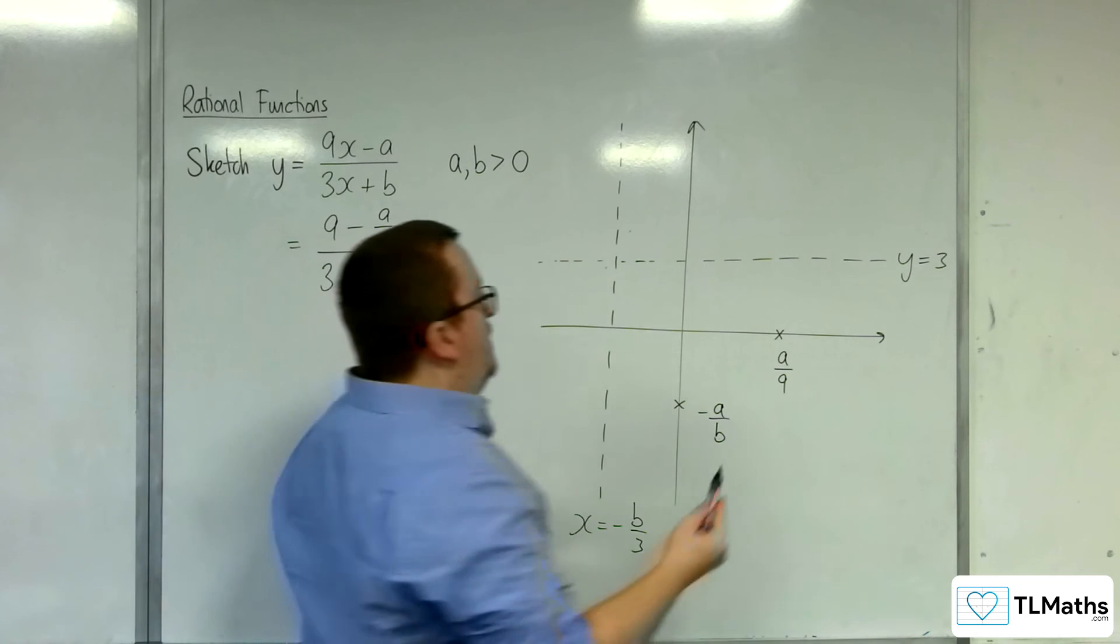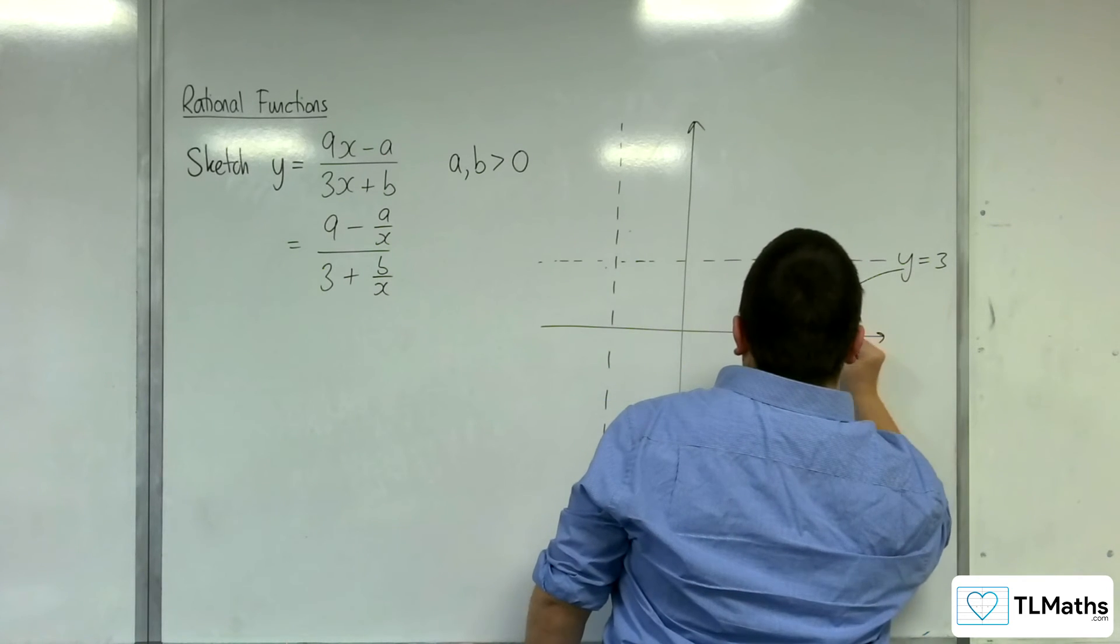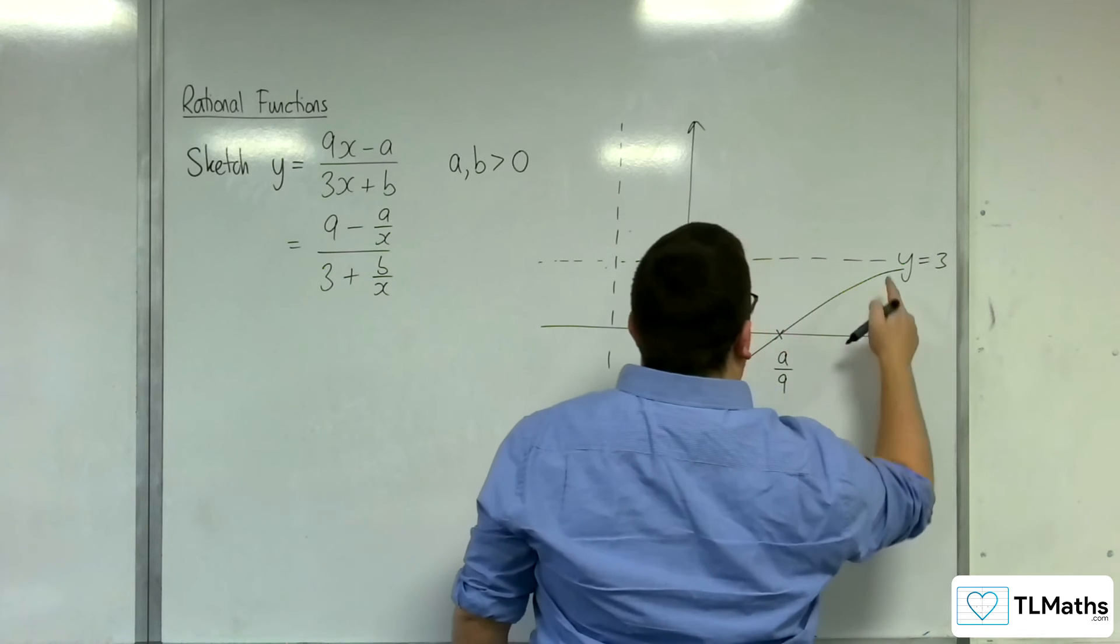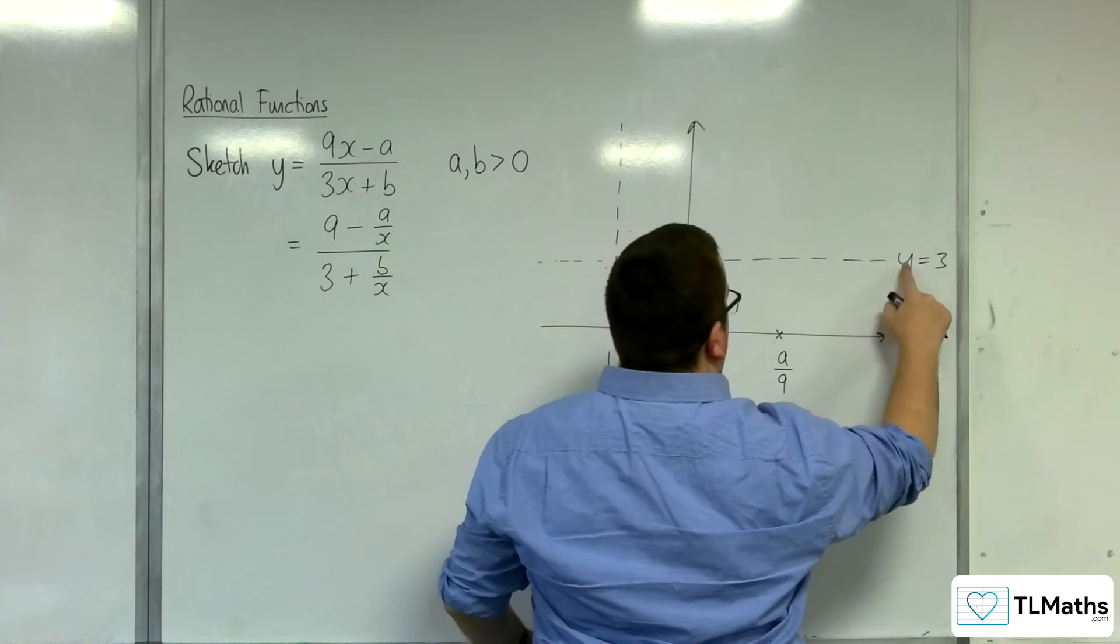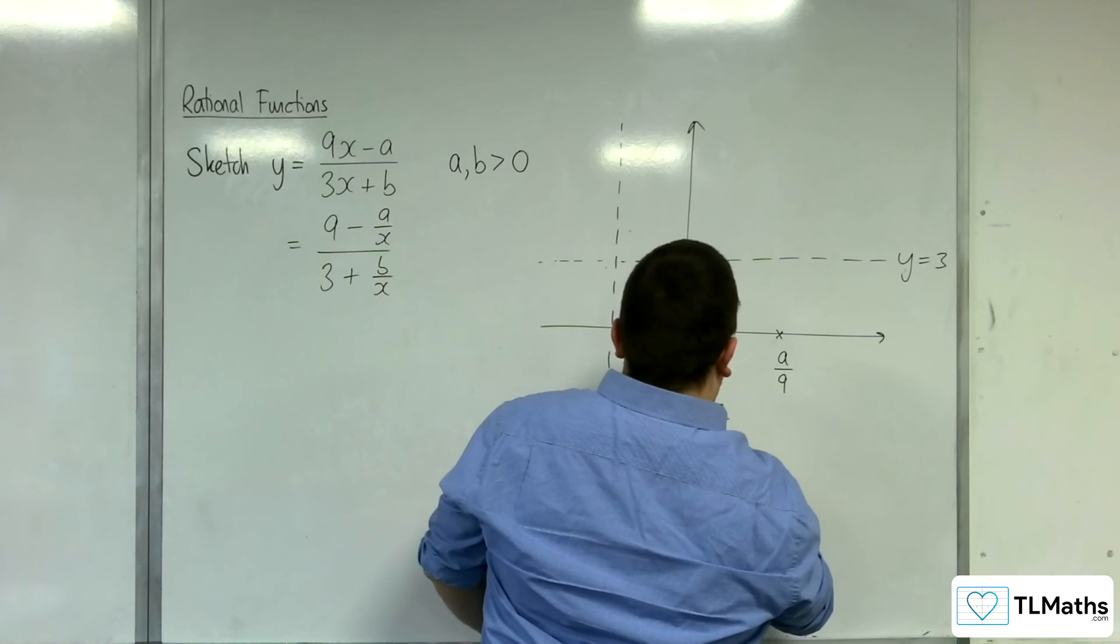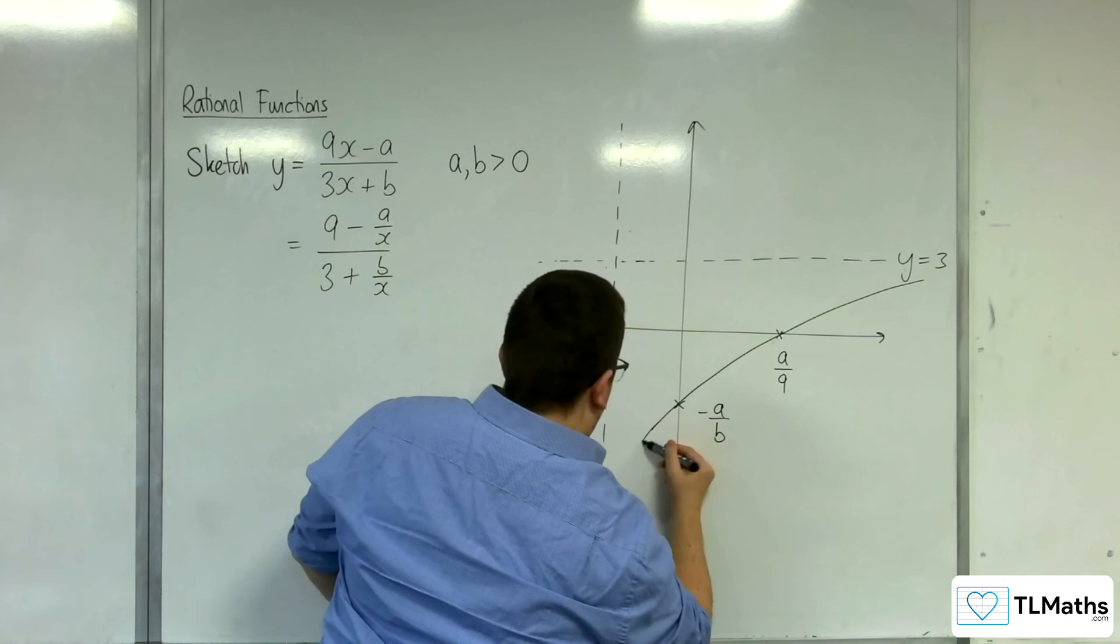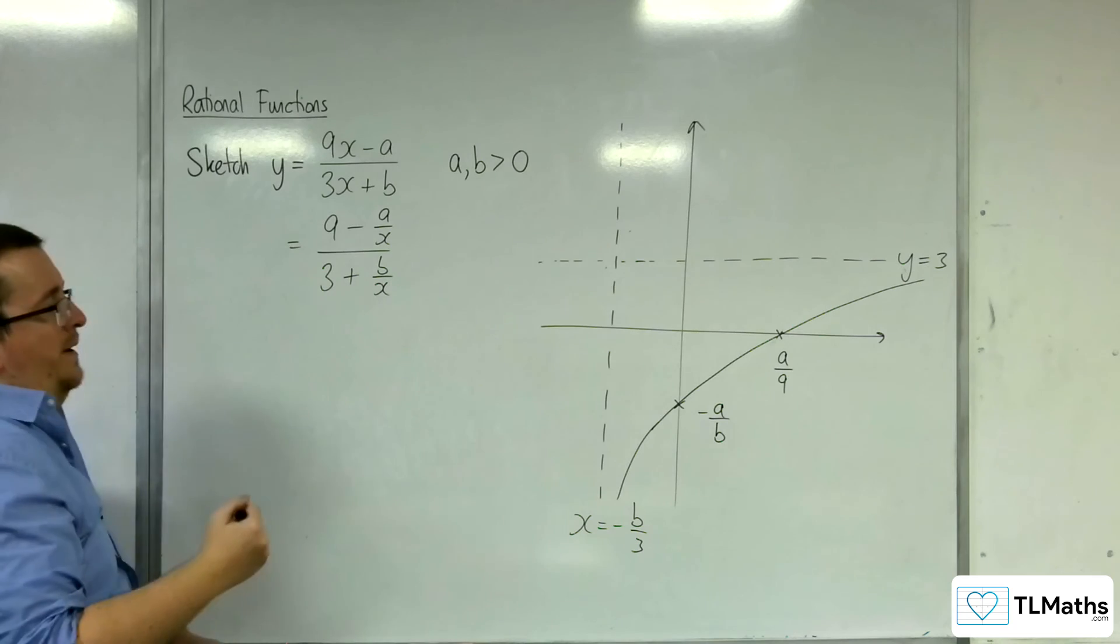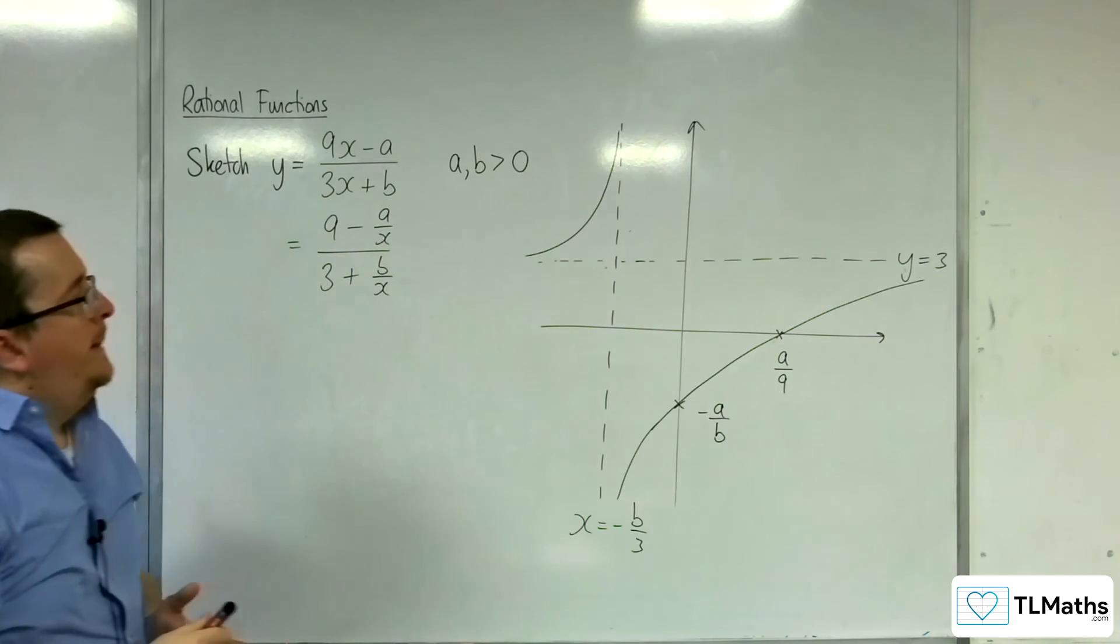And so the curve must go through those two points and tend towards the asymptotes. Oh, that wasn't very good. And I'm going to rectify that. Let's try that again. Something like that. That's a bit better. And for this portion of the graph, it will be up here.